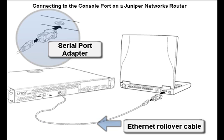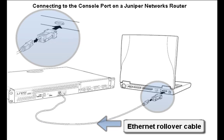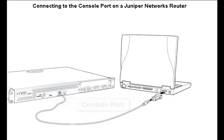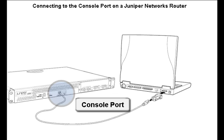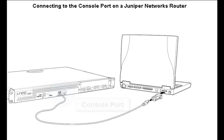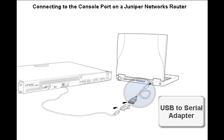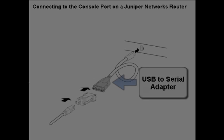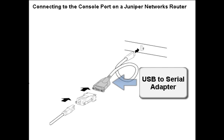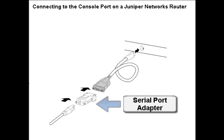Begin by plugging the Ethernet cable into the RJ45 to DB9 serial port adapter, and then plug the serial port adapter into the computer you are using. Next, connect the Ethernet cable to the console port on your router. If your laptop or PC does not have a DB9 serial port, you will also need a USB to serial port adapter, which plugs into your computer's USB port and then into the RJ45 to DB9 serial port adapter.